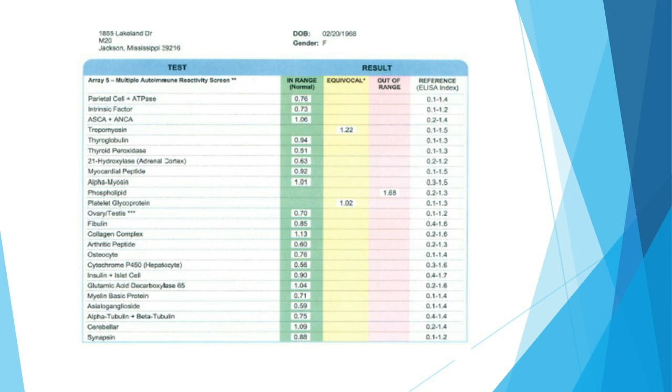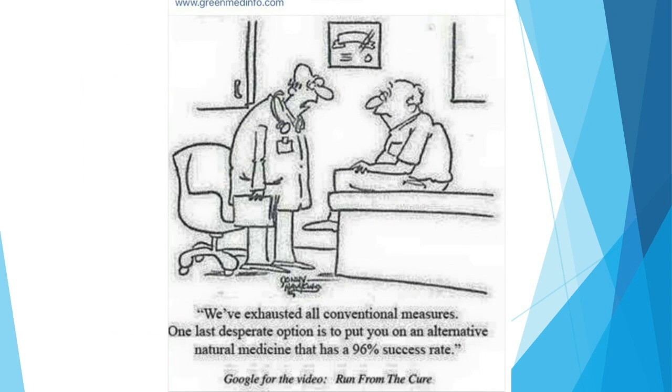Like I mentioned before, a lot of times with these patients with hypothyroidism that's autoimmune-derived Hashimoto's, they've been looking for a while. They've been struggling. Before she got to me, she had spent seven years of having symptoms that were not resolved by medications. We had to dig a little bit deeper. I love this cartoon. You know, we have exhausted all conventional measures. One last desperate option is to put you on an alternative natural medicine that has a 96% success rate. Why do we wait until we're completely miserable before we succumb to lifestyle changes?